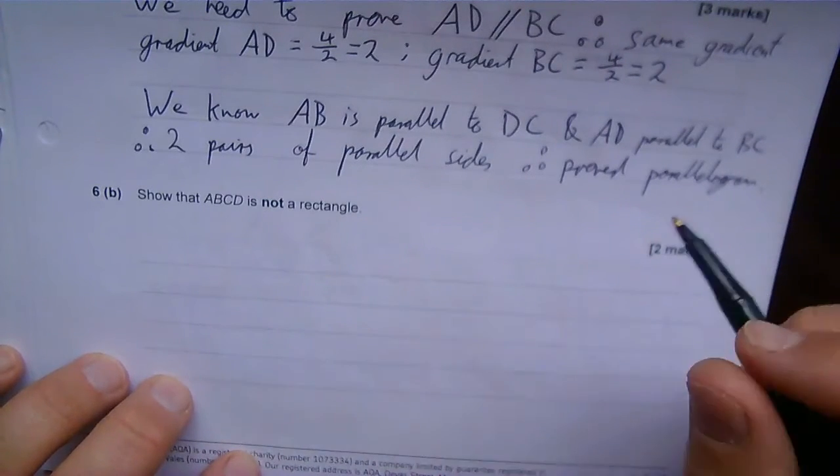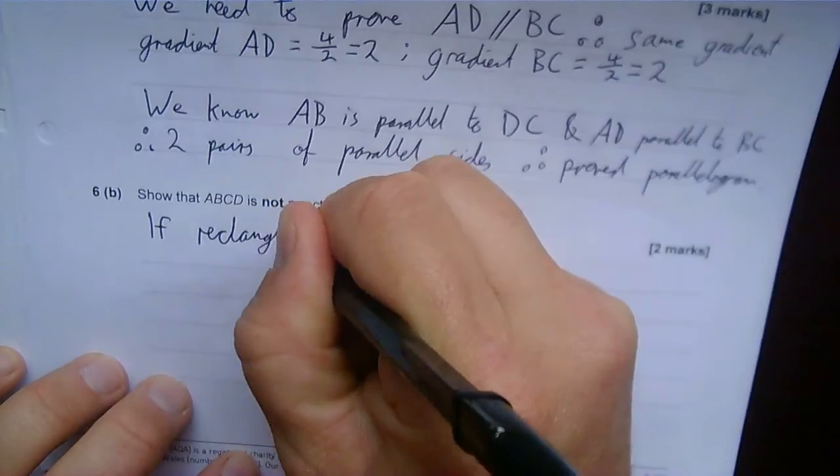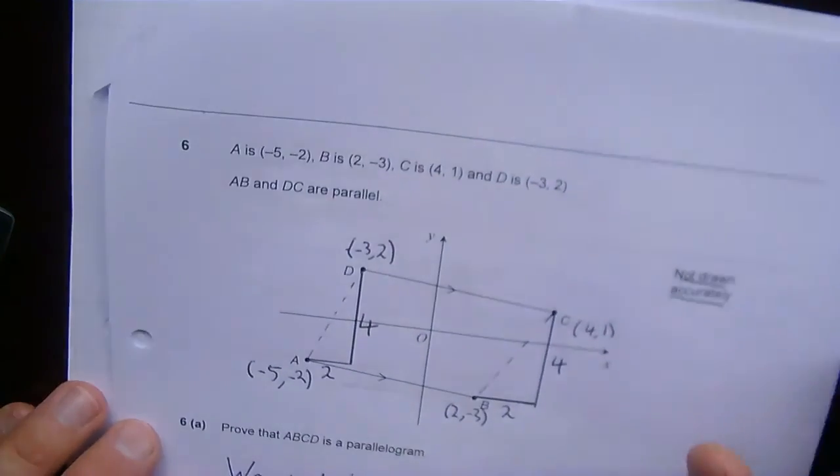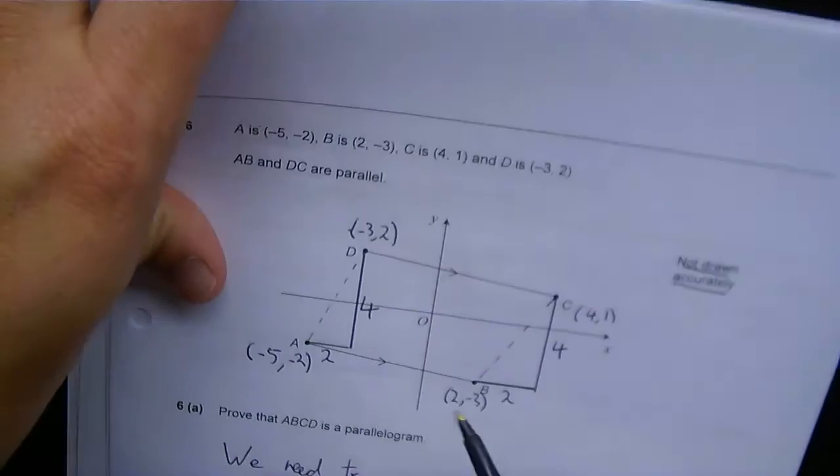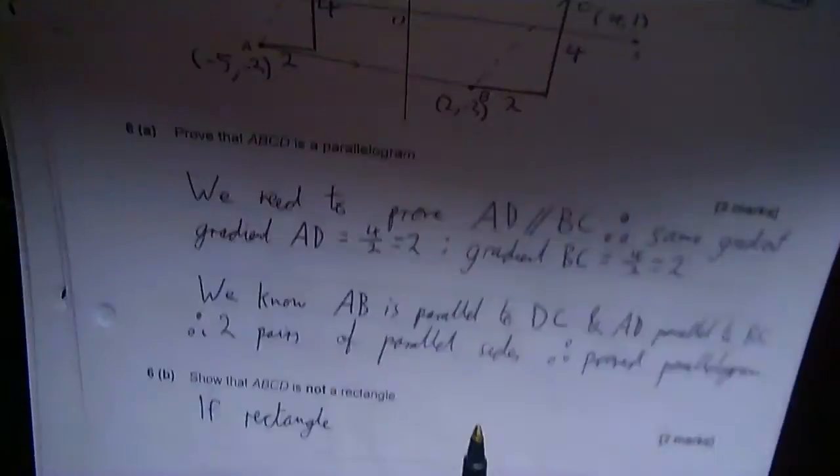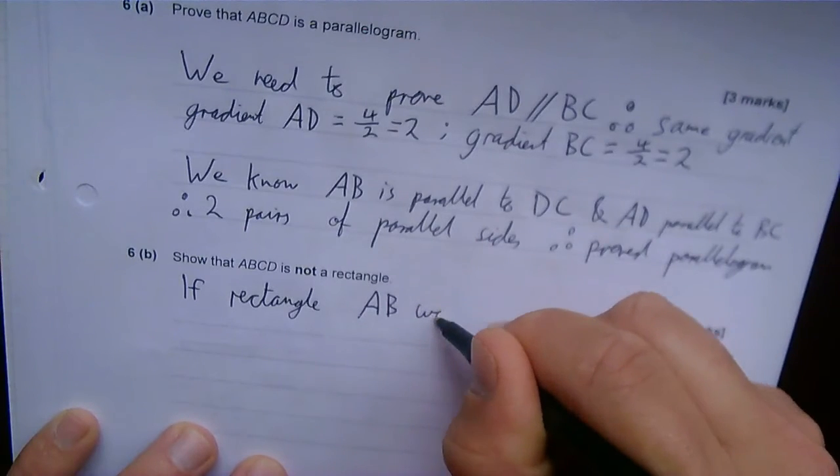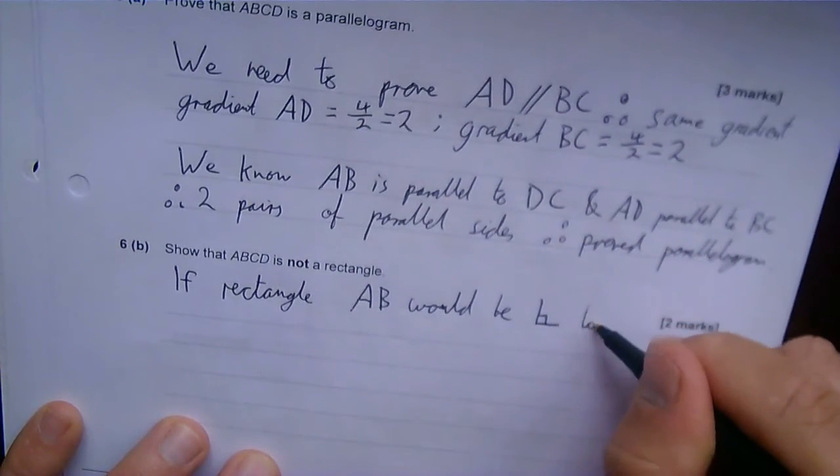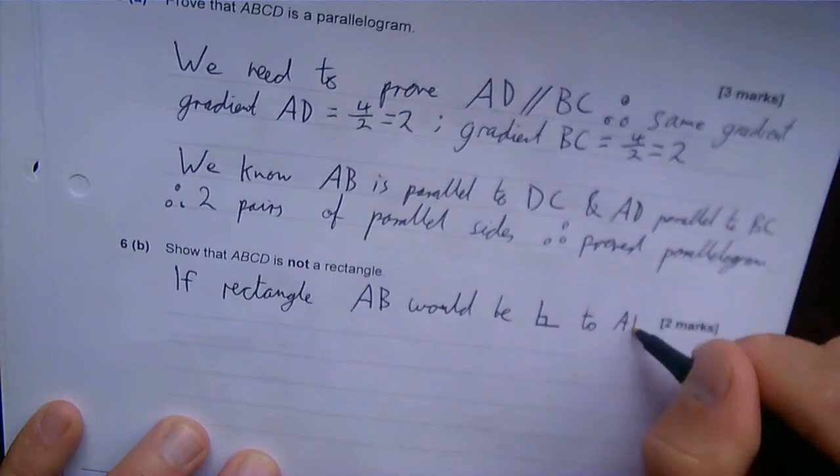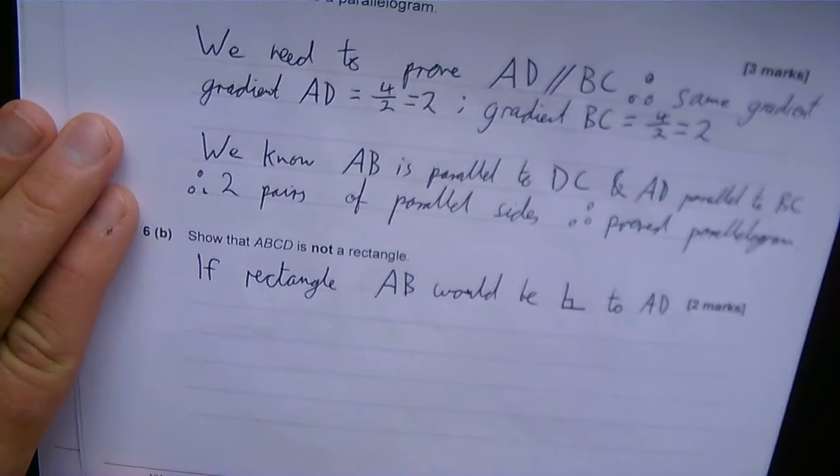If it were a rectangle, what would have to be the case? Well, this would have to be a right angle here, wouldn't it? So AB would have to be at right angles or perpendicular to AD. And the same here and the same all over. But I'm just going to take AB and AD. Those would have to be at right angles if this was a parallelogram.